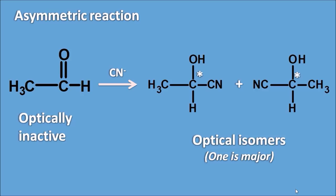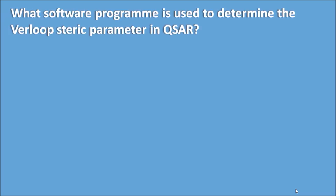Such a reaction which produces a new chiral center with either enantiomers or diastereomers as products — one being the major and another the minor — is called an asymmetric reaction. So Option C is the right answer. Moving to the next question: what software program is used to determine the Verloop's steric parameter in QSAR?